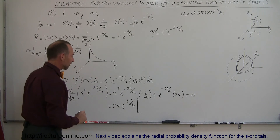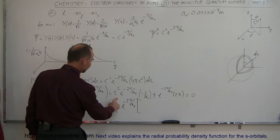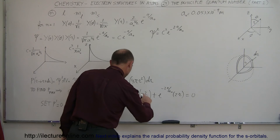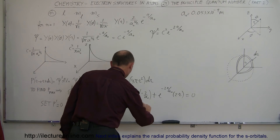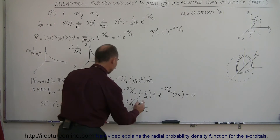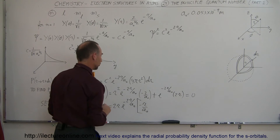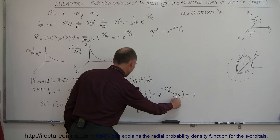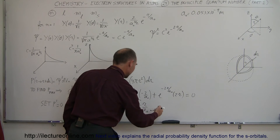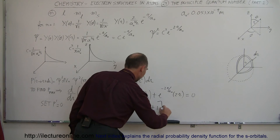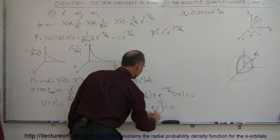What do we have left over? We have an r left over and a minus and an a sub-naught, so minus r over a sub-naught from the first term, and from the second term, plus 1. That gives us 2r times e to the minus 2r over a sub-naught, times the quantity minus r over a sub-naught plus 1, and that equals zero.